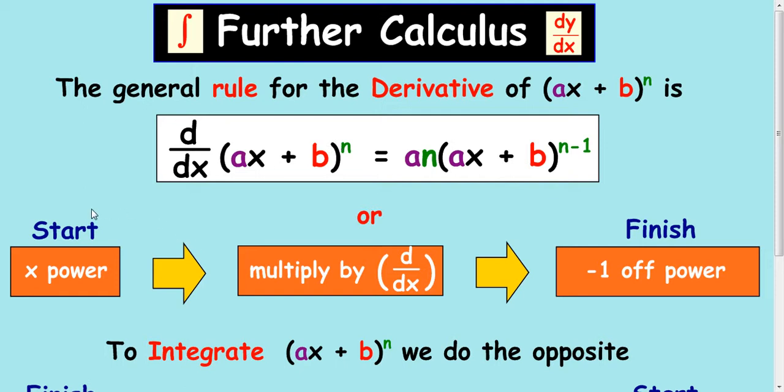When you differentiate a bracket with a power, we multiply by the power, then multiply by the derivative of the bracket, and we also reduce the power by 1.